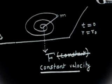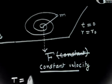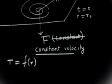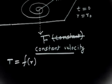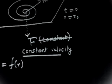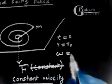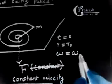We have to find the thread tension as a function of r. It is also given that at t = 0, r = r₀ and angular velocity is ω₀, so at t = 0, ω = ω₀.